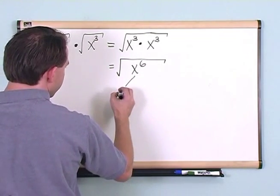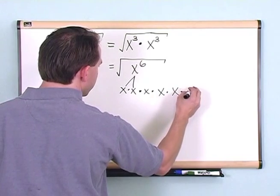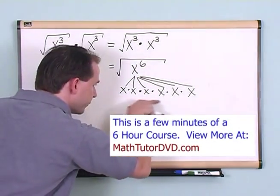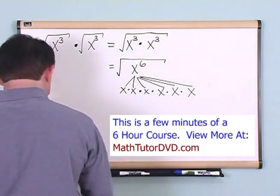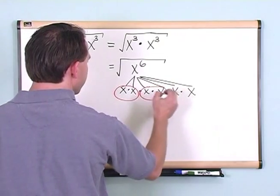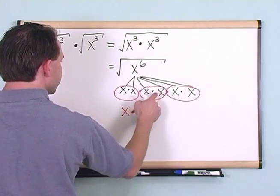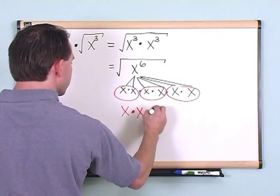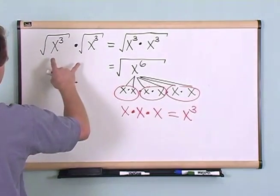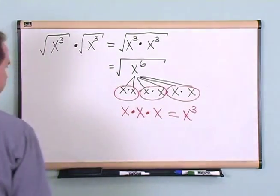x to the sixth power is x times x times x times x times x times x — that's x multiplied by itself six times. Because this is a square root, I'm looking for pairs of two. There's a pair of two, another pair of two, and another pair of two. Each x comes out of the radical, and x times x times x is just x to the third power. You multiply what's inside, use algebra to simplify, and arrive at the final answer: x to the third power.